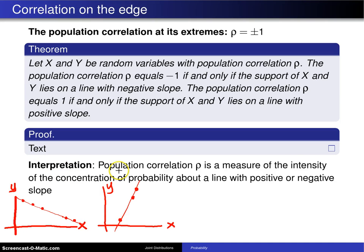The interpretation here is the population correlation rho is a measure of the intensity of the concentration of the probability about a line with positive or negative slope. So that is a nice interpretation of the correlation. This is maybe not a bad time to get into the notion of something known as causality.